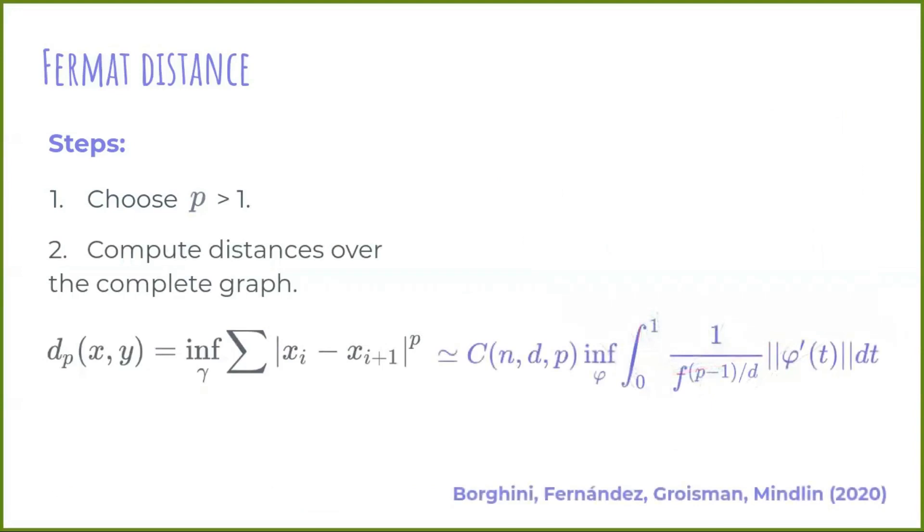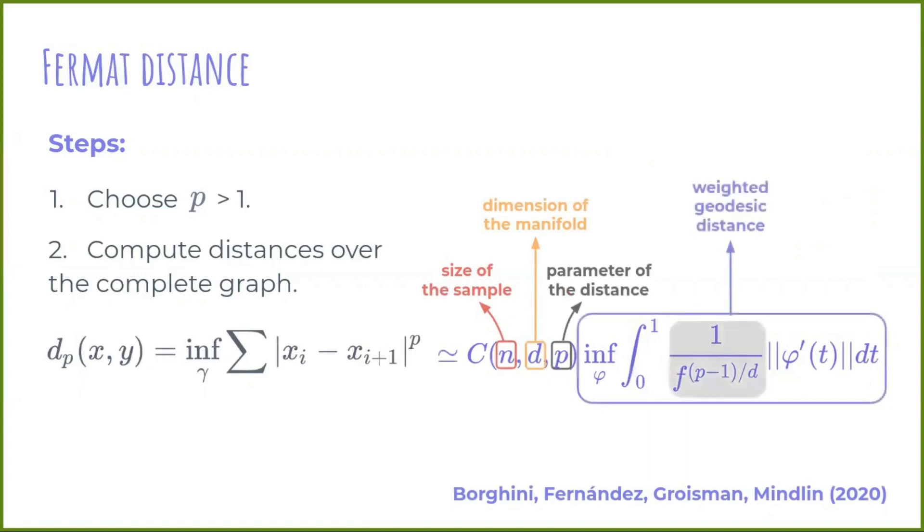Recently, it was proved that, after some constants that depend on the size of the sample, the dimension of the manifold, and the parameter p, Fermat distance is a good estimator of a weighted geodesic distance that is similar to the inherited geodesic distance, but with a weight associated to the density of the manifold that produced the sample.